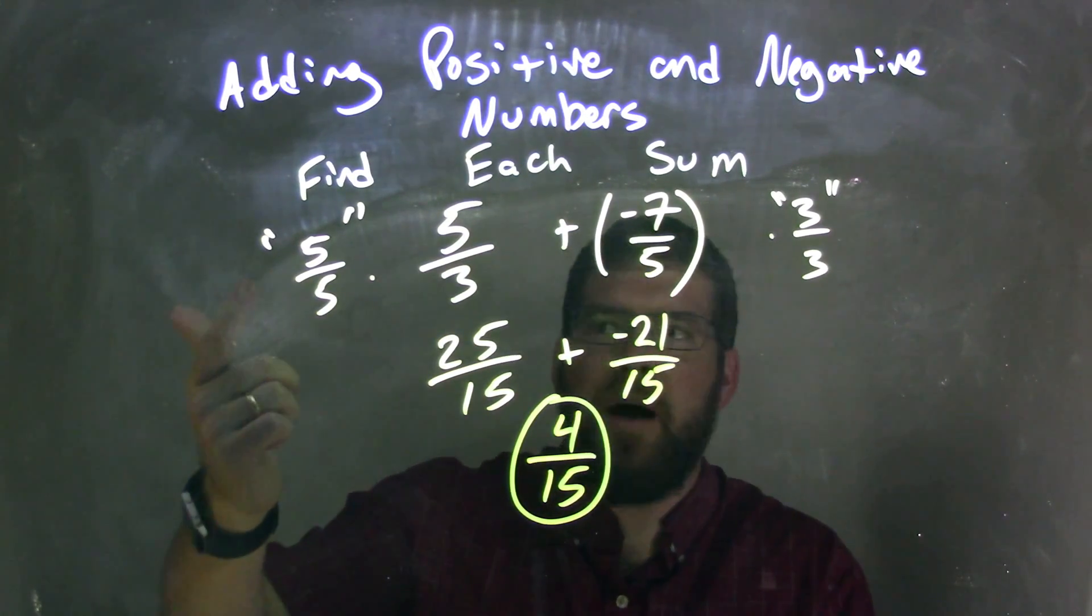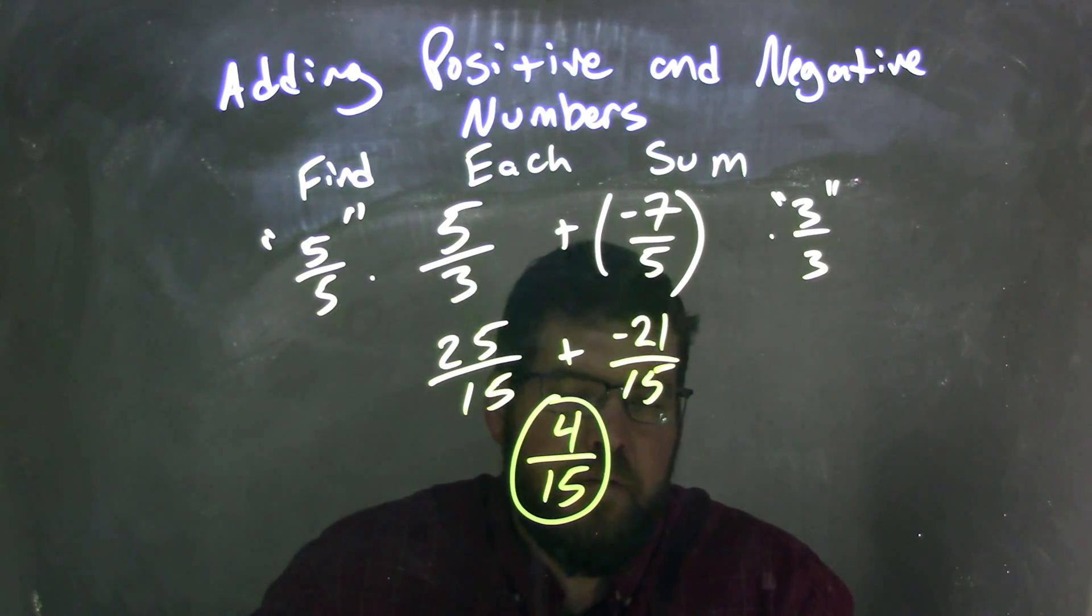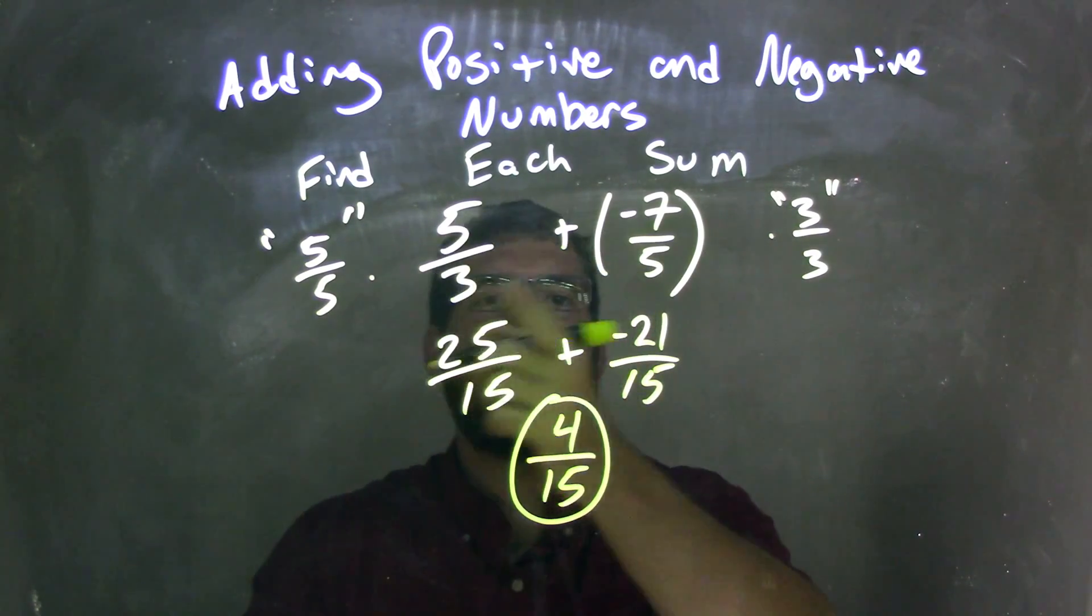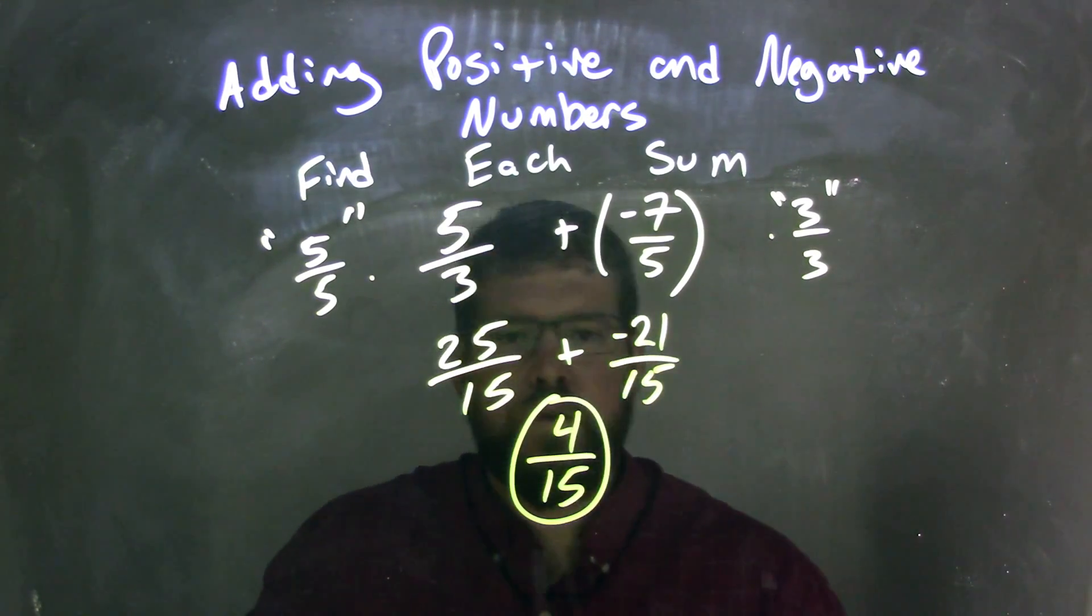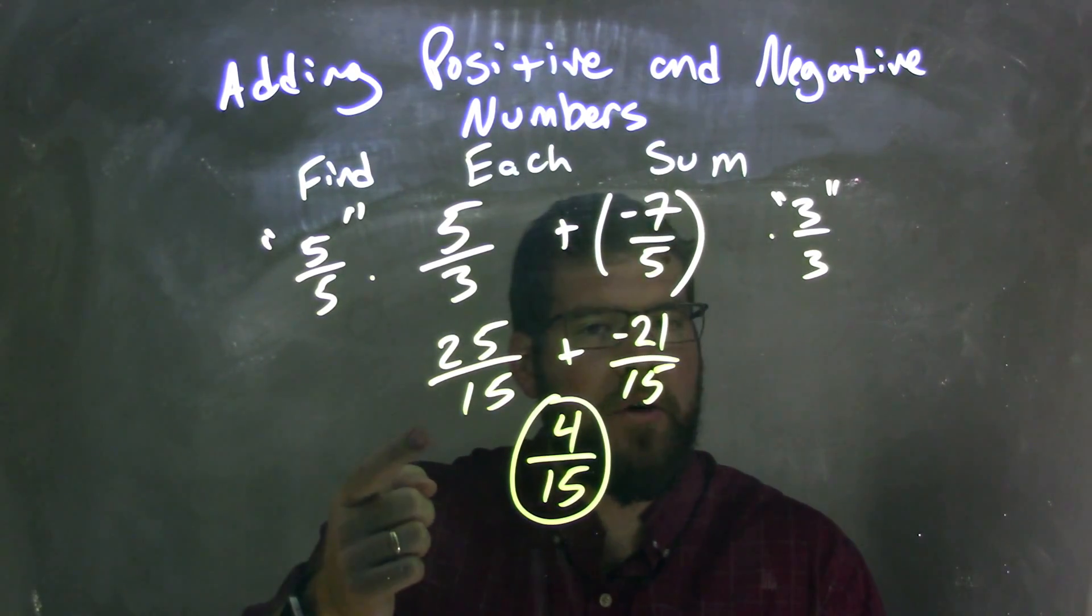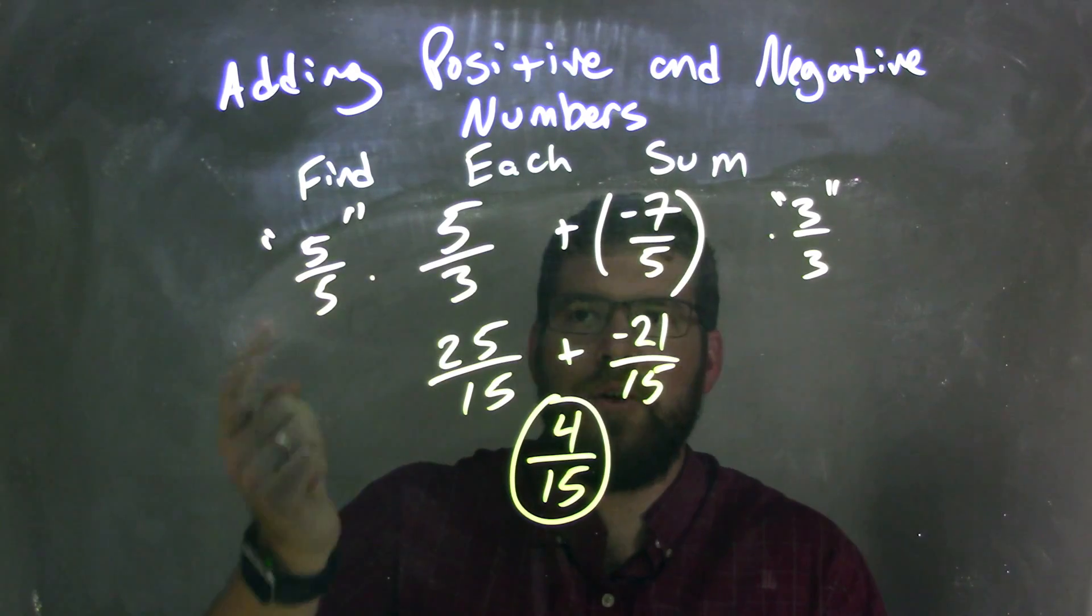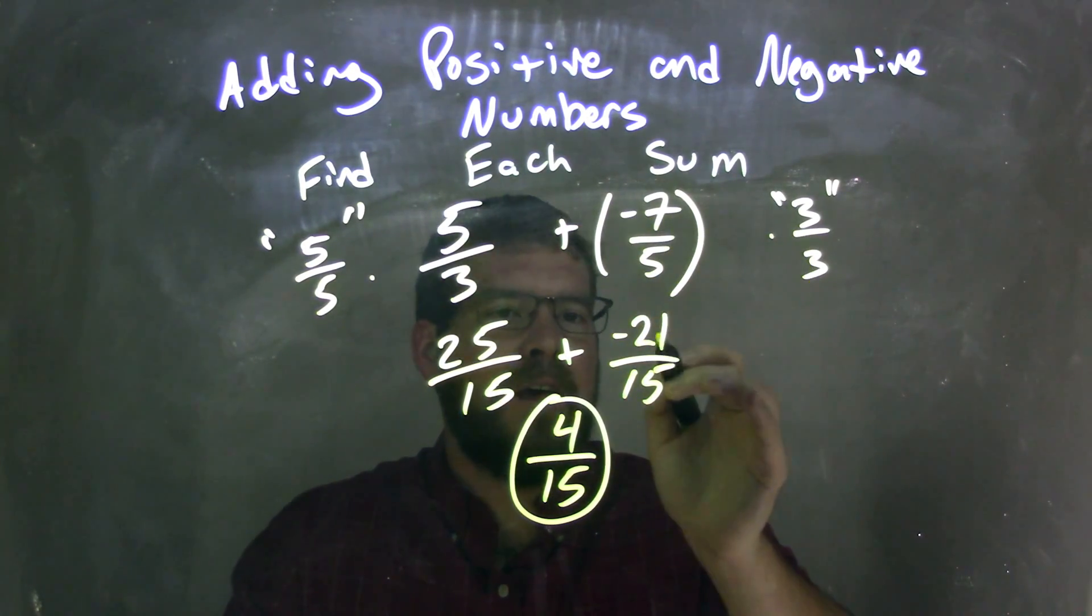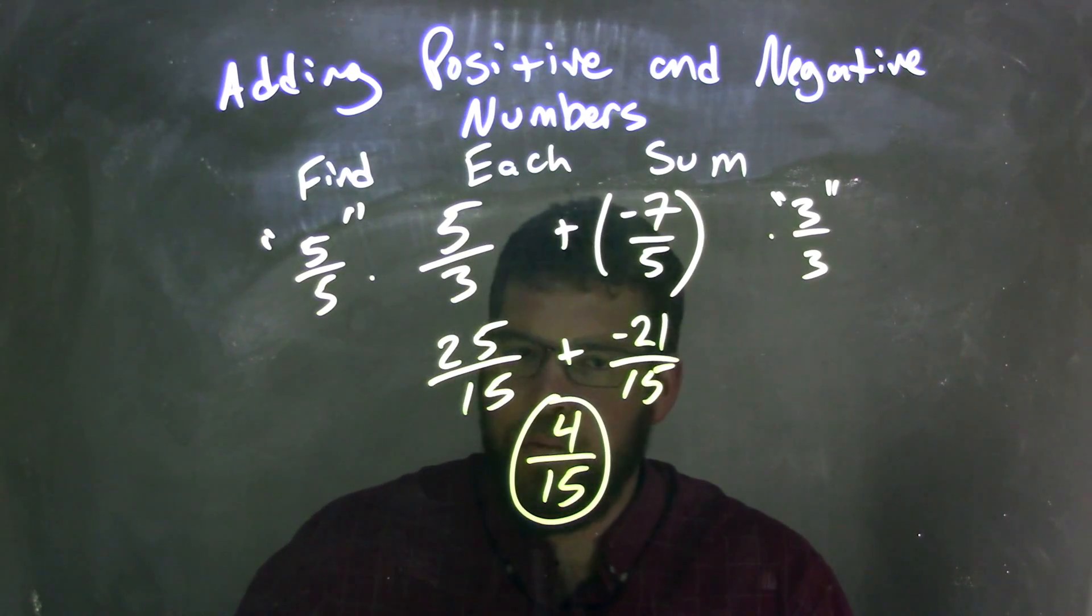I took 5 thirds and multiplied by 5 over 5, which is 1, and I took negative 7 over 5 and multiplied by 3 over 3. I got these numbers because I knew that 3 and 5 both went into 15. 5 fifths times 5 thirds is 25 over 15, multiplying across the numerator and denominator. And negative 7 over 5 times 3 thirds is negative 21 over 15 for the same reasons.